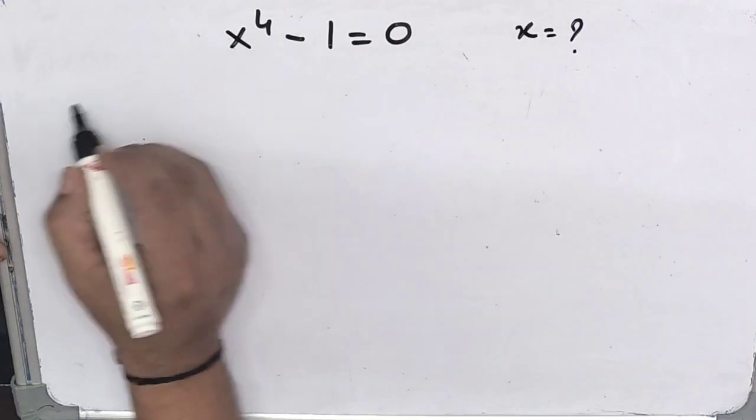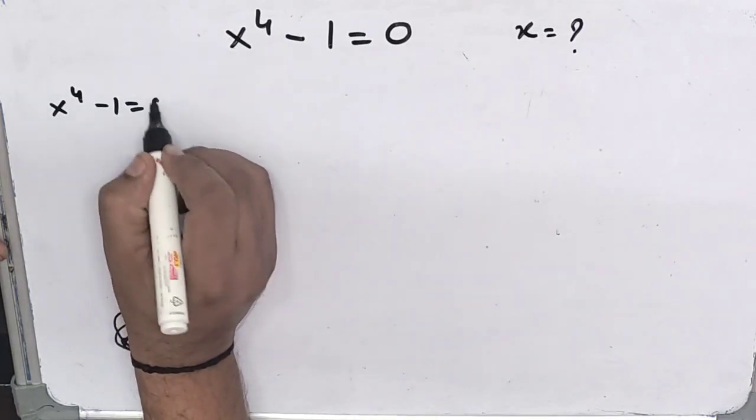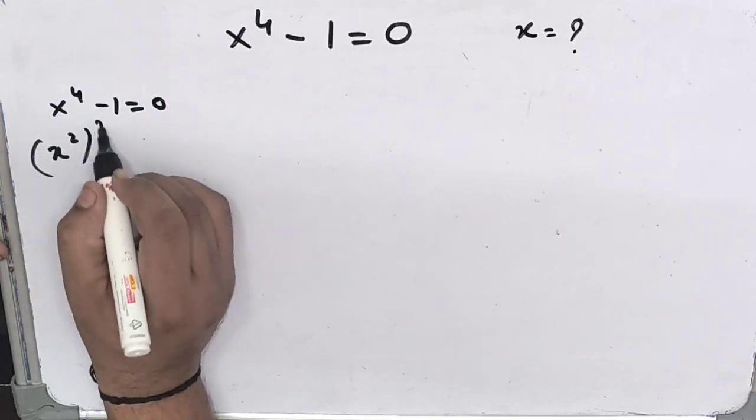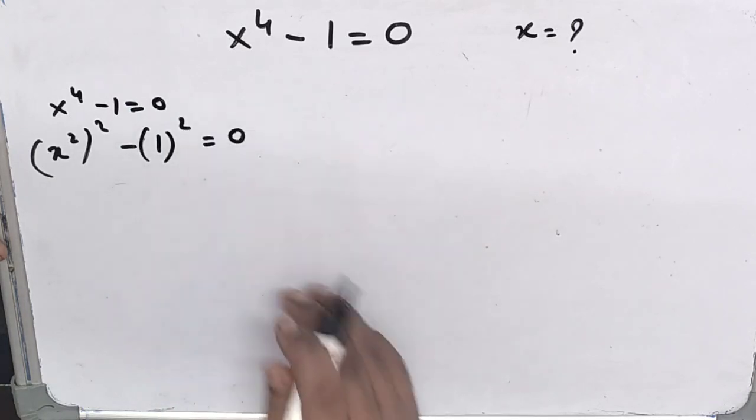So what can we do? This x to the power 4 minus 1 equals to 0 can be written as x to the power 2 whole to the power 2 minus 1. 1 can be written as 1 to the power 2 equals to 0.